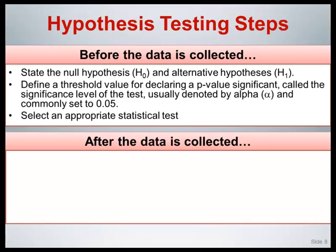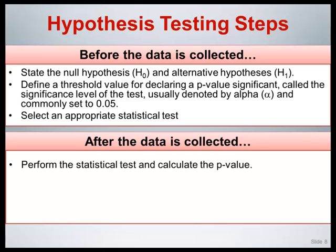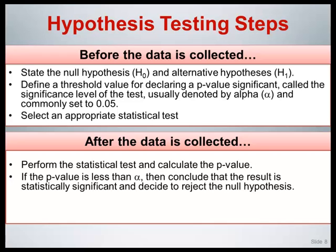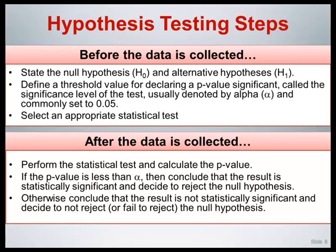After the data is collected, perform the statistical test and calculate the p-value. If the p-value is less than or equal to alpha, conclude the result is statistically significant and reject the null hypothesis in favor of the alternative hypothesis. Otherwise, conclude that the difference is not statistically significant and fail to reject the null hypothesis.